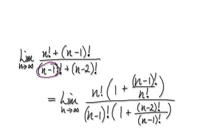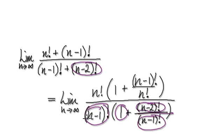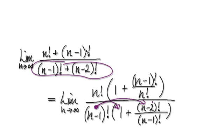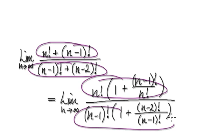Select the bigger of the two — n minus 1 versus n minus 2. This one seems to be the bigger one. So factorize out n minus 1 factorial, giving you 1 here and then the same pattern, over n minus 1 factorial. If you multiply these together, that gives you the denominator.